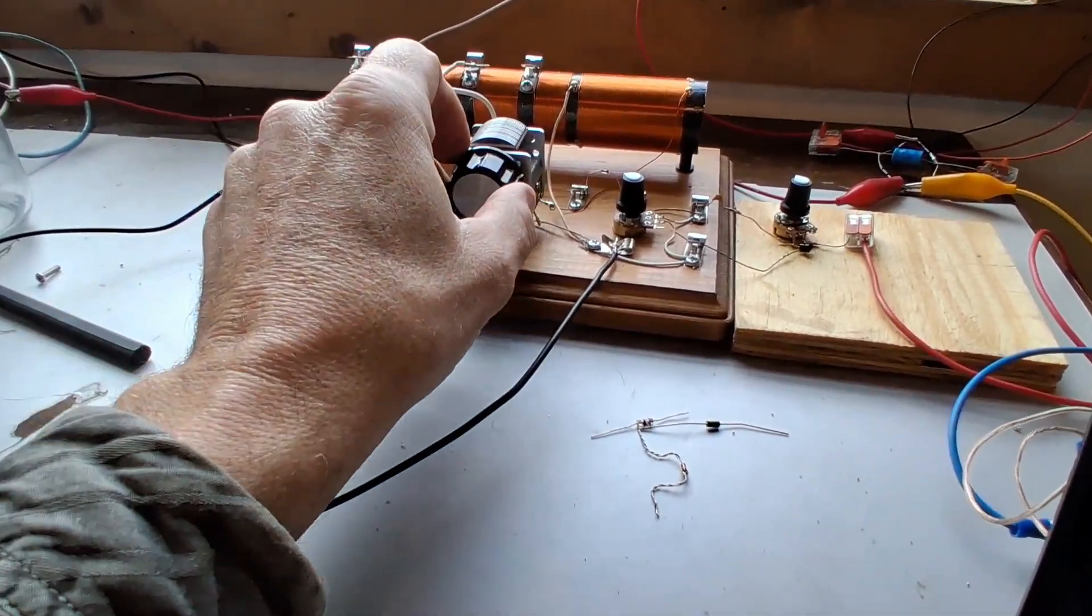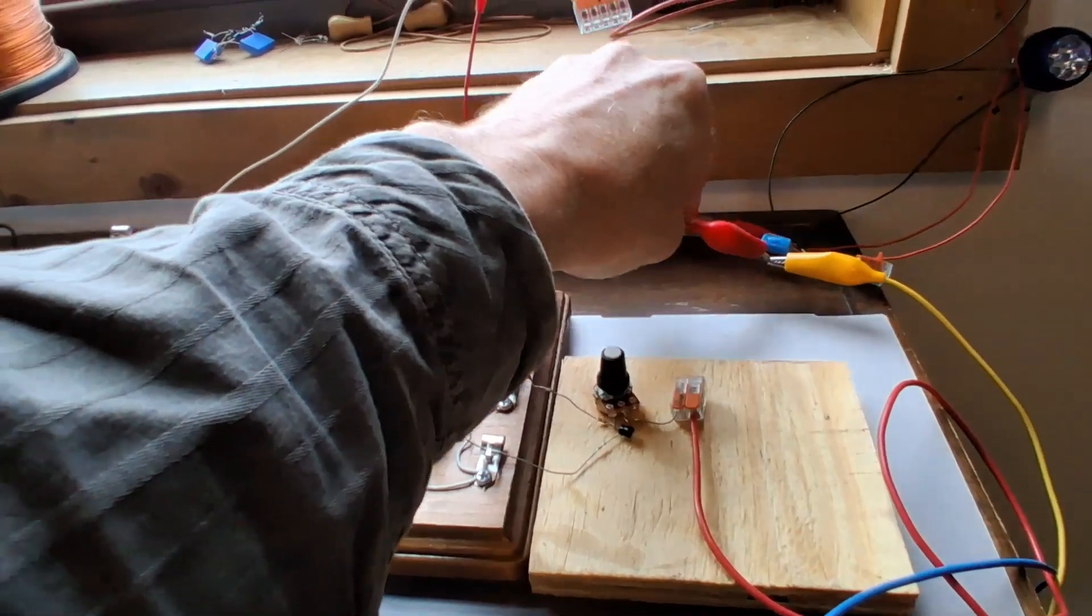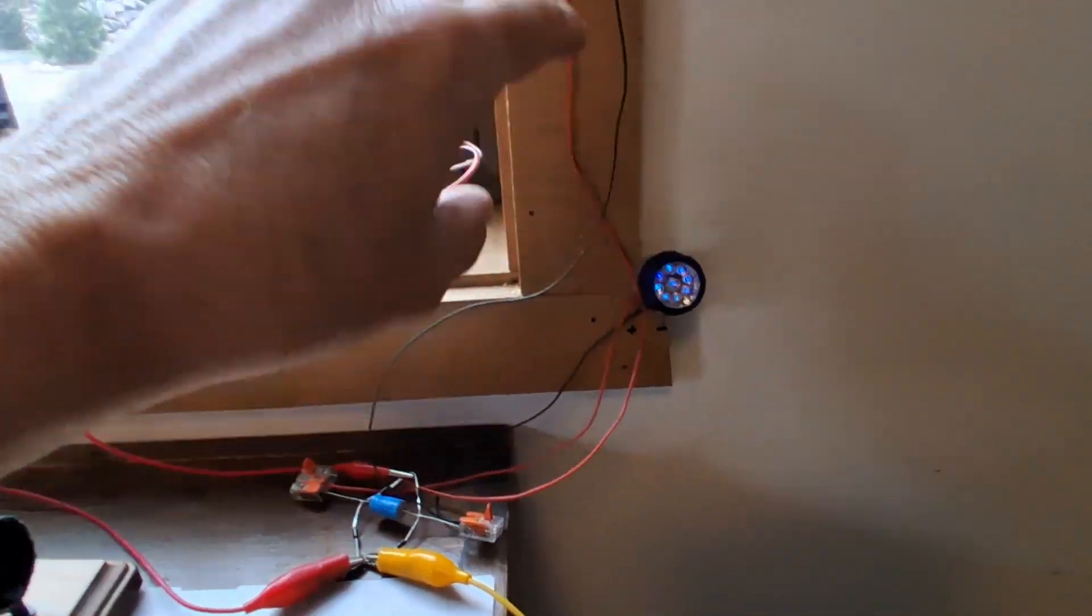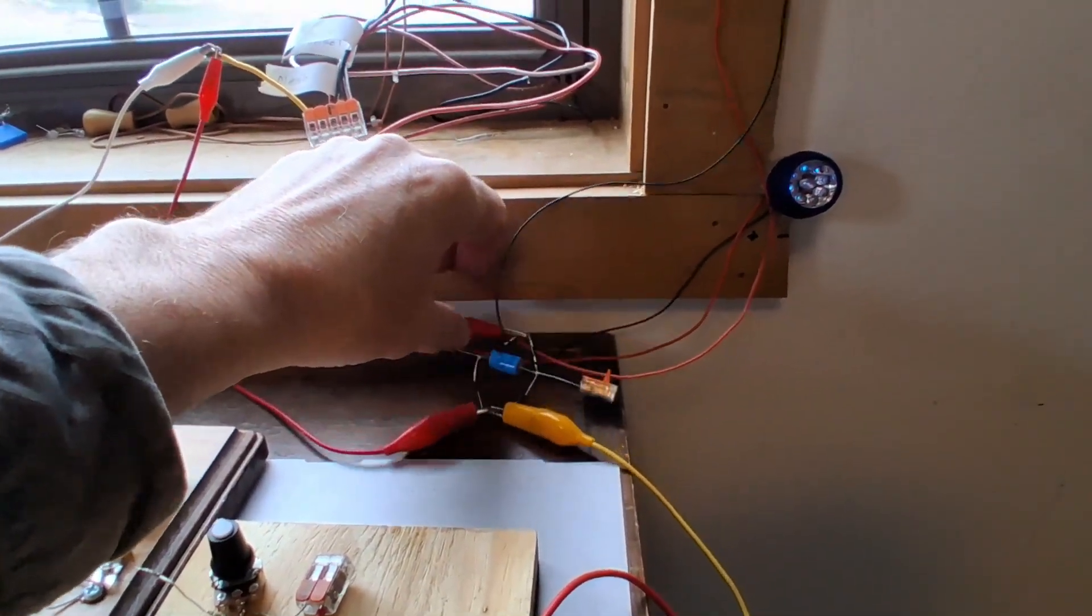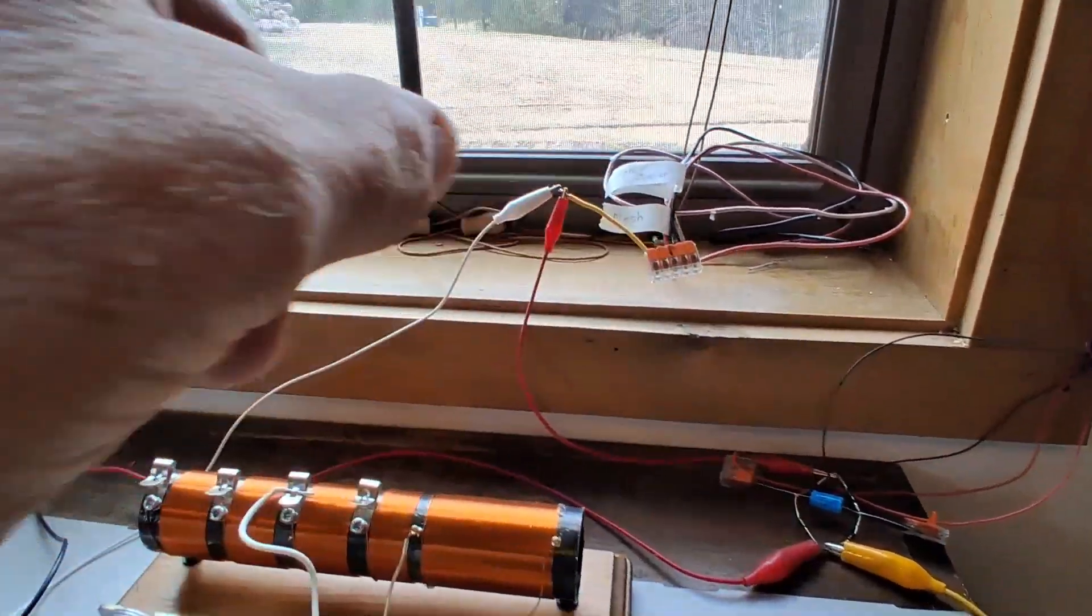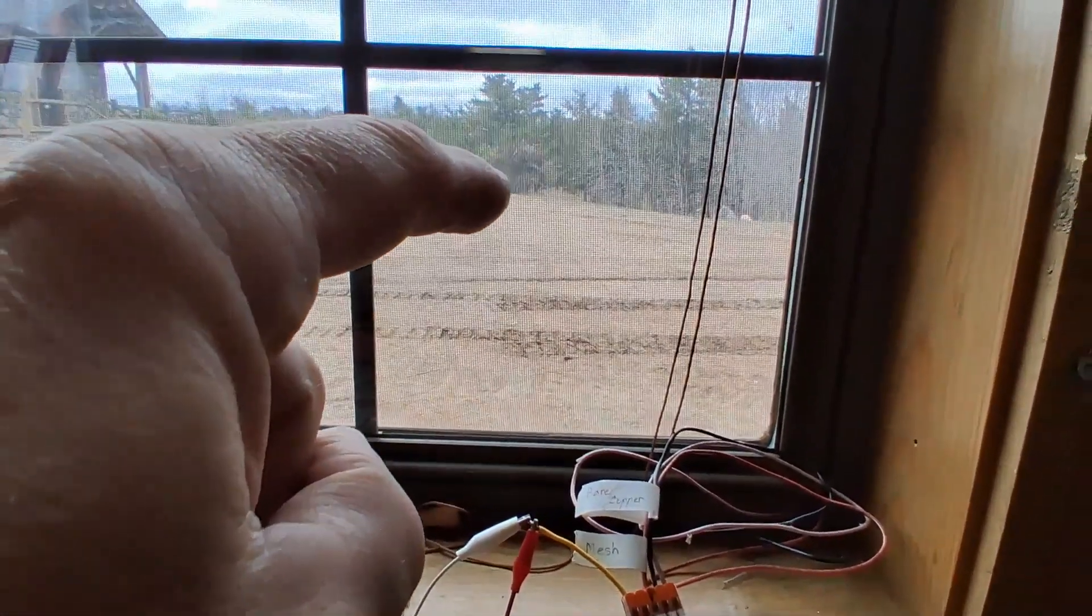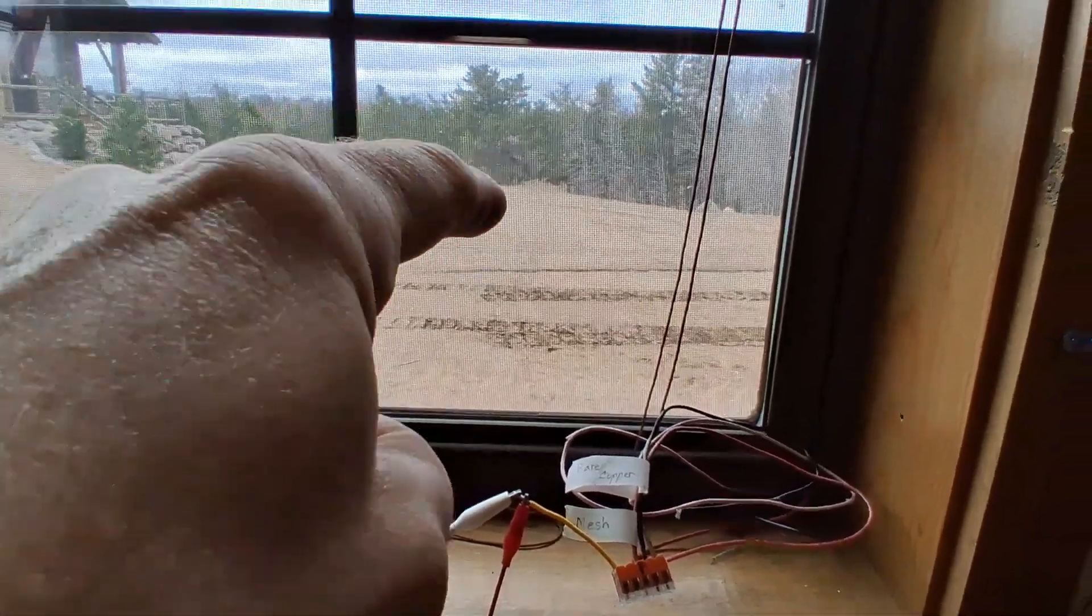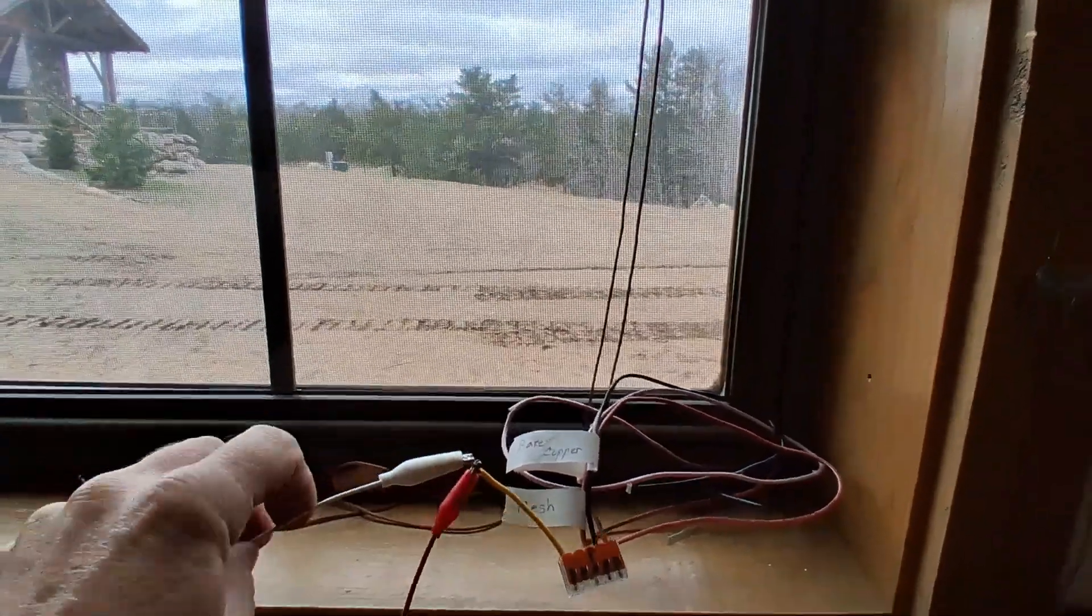This ground right here that I'm using for these little LED lights—these are awesome scavenger antennas I showed in the other video—this ground is a ground I have driven down by the pond about 250-300 feet down the hill.